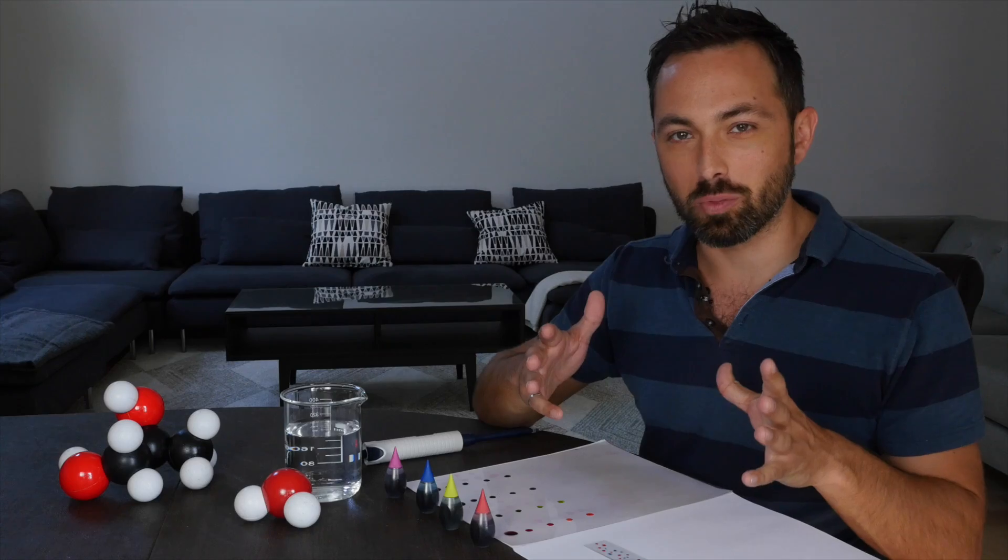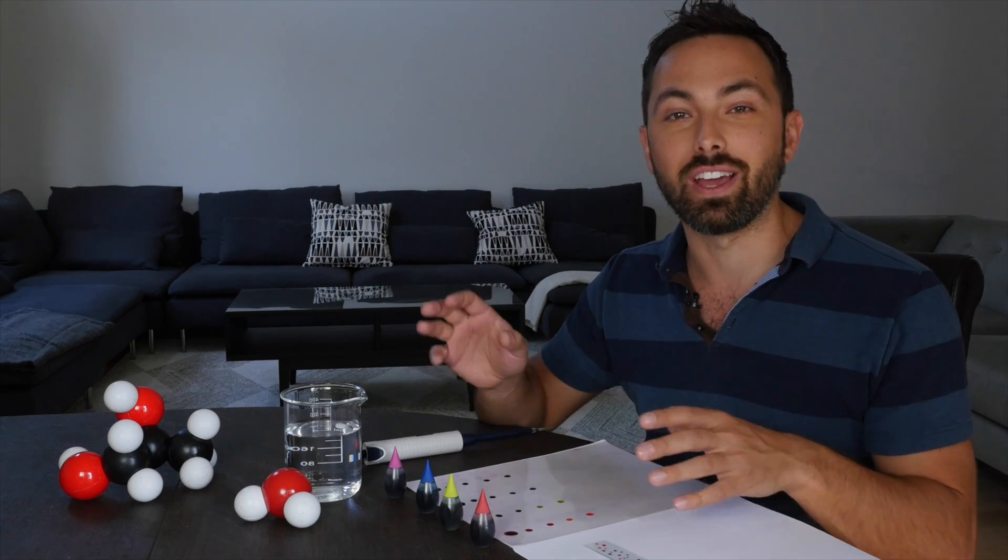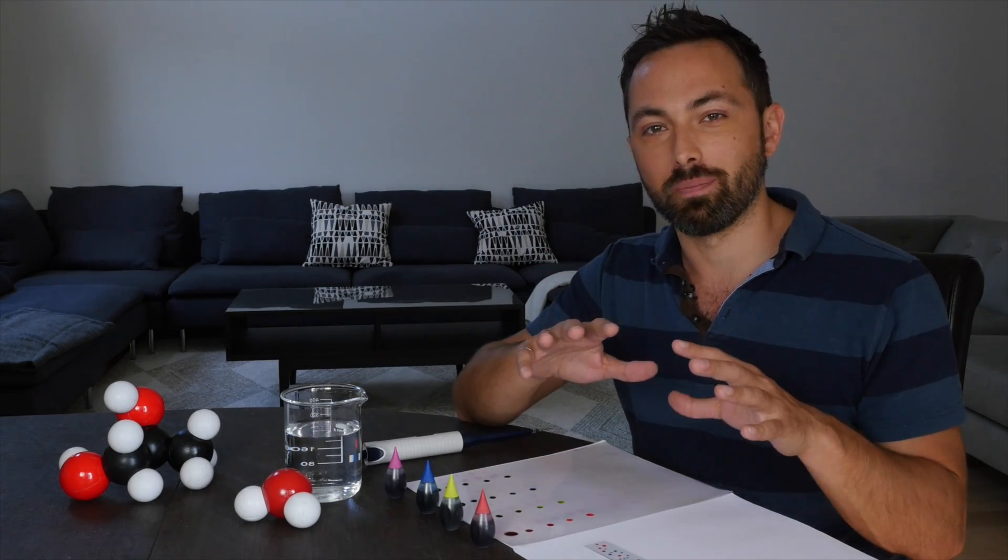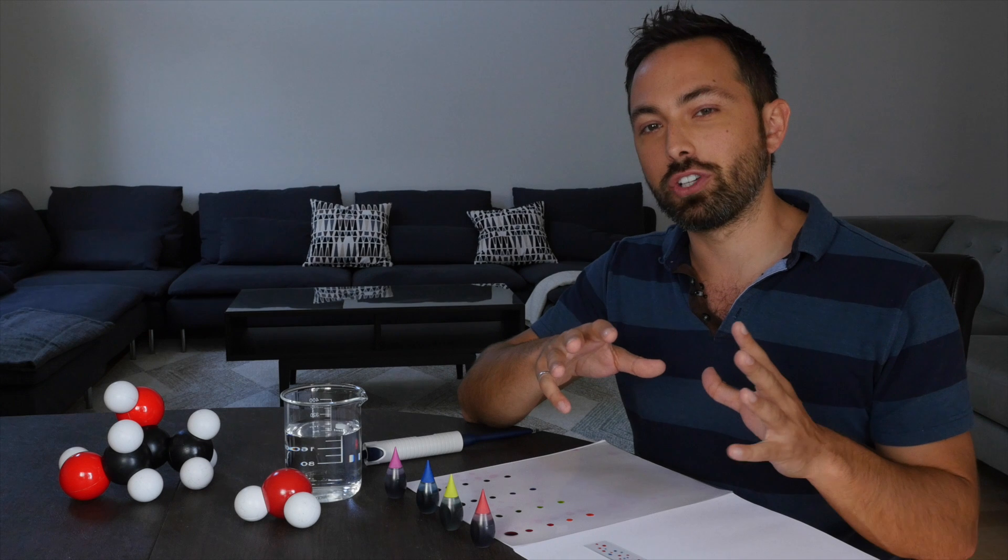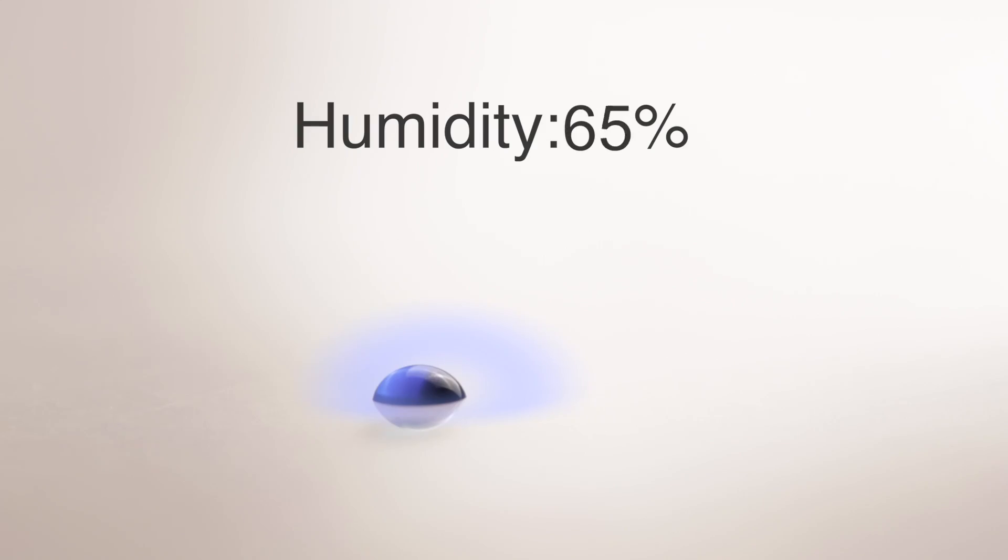But how is this possible just using ordinary food coloring and water? Well the key is evaporation. Each drop is constantly evaporating, so around it is an envelope of vapor. The rate of evaporation depends on the humidity around the drop, so the drier the air is, the faster the rate of evaporation.